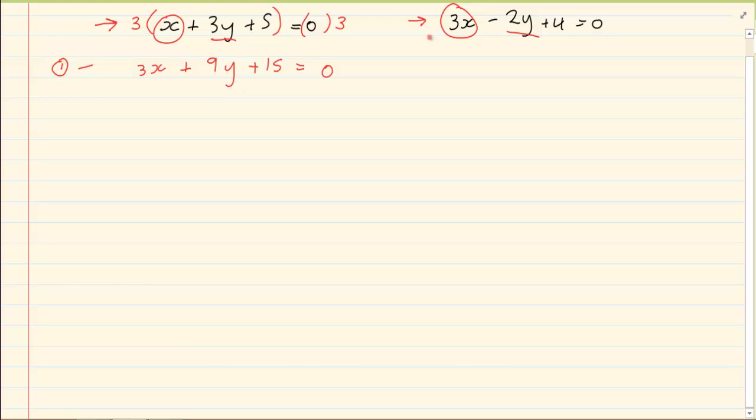Let's bring down our second equation. 3x minus 2y plus 4 is equal to 0.